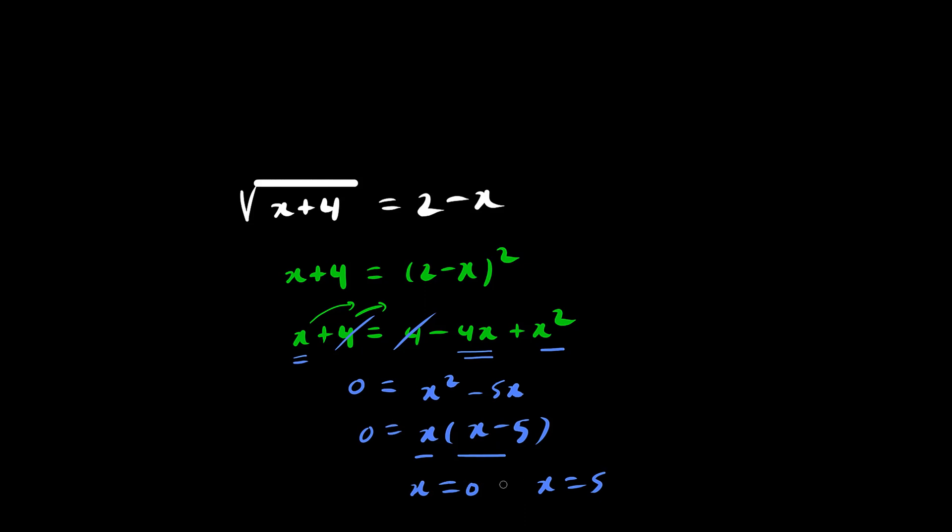Now, we have two answers, but we need to verify that our answers are correct. Suppose x is 0, which is what we got previously. This here is your left side of the equal sign, and this here is your right side. If x equals 0, left side is equal to the square root of 0 plus 4, which is the square root of 4, which is 2. And the right side would be 2 minus 0, which is also 2. Left side equals right side. Therefore, this is a valid solution.